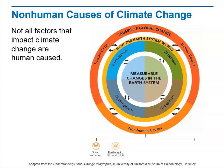Earth's spin, tilt, and orbit affect climate. The tilt results in uneven heating of different regions of the Earth, and the orbit makes it so that sometimes the northern hemisphere is pointing toward the Sun and sometimes the southern hemisphere is pointing toward the Sun.